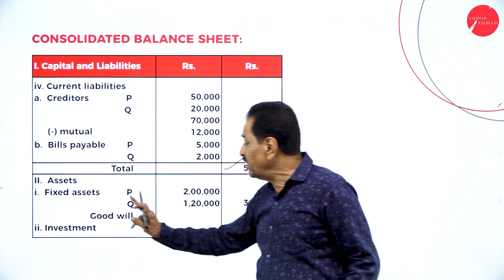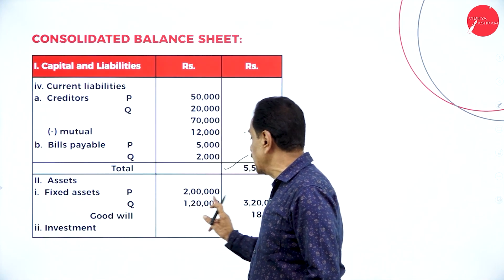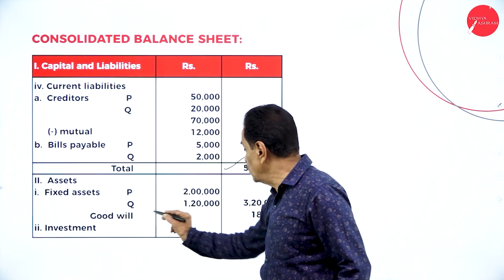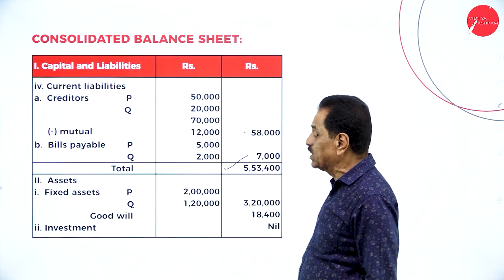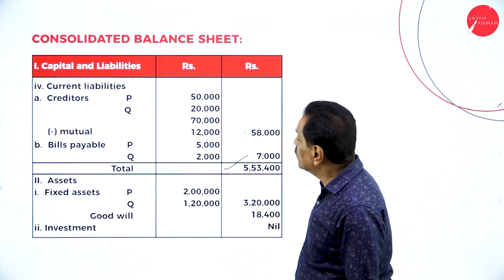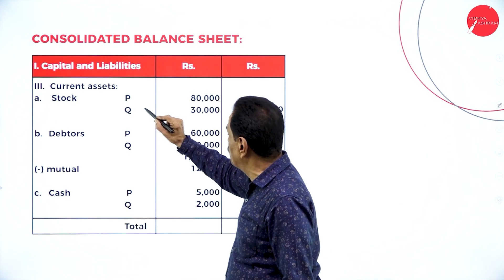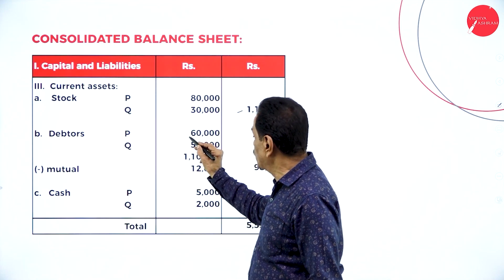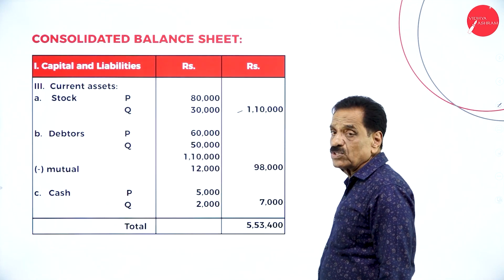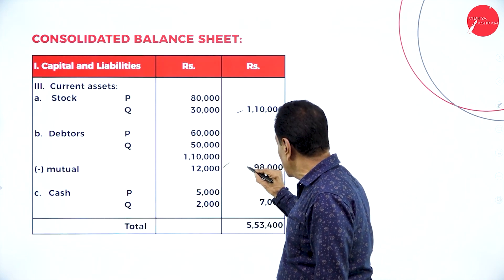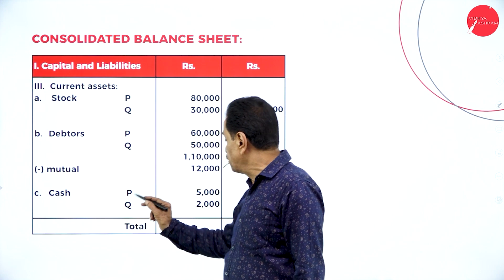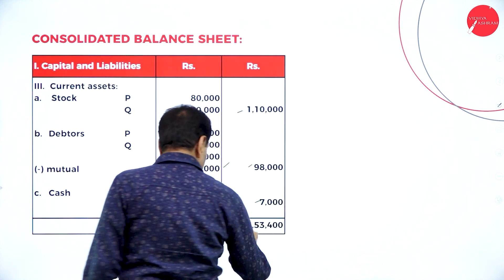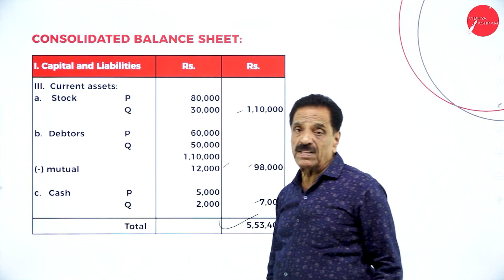Asset side: Fixed assets — P-Limited 2,000 plus Q-Limited 3,20,000 (tangible assets). Goodwill (intangible asset) is 18,400. No investments remaining. Current assets — stock: P 80,000 plus Q 30,000 equals 1,10,000. Debtors: 60,000 plus 50,000 equals 1,10,000 minus mutual adjustment of 12,000 equals 98,000. Cash: P is 5,000 and Q totals 7,000. Total balance sheet tallies at 5,53,400.